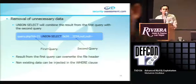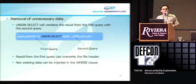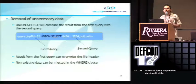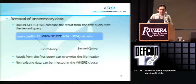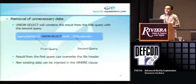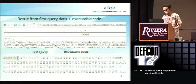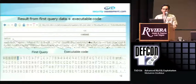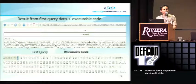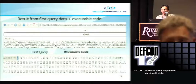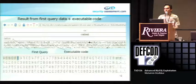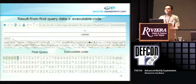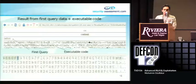UNION SELECT combines the result from the second query and the first query. Most of the time, the result from the first query will override your file header. To prevent this, we can inject a non-existing value in the WHERE clause. For example, if the variable 'question' equal to 169 returns the string DEFCON, that string will override our file header. By substituting a non-existing value for the variable, we can force the application to return empty data, preventing our file from being corrupted.